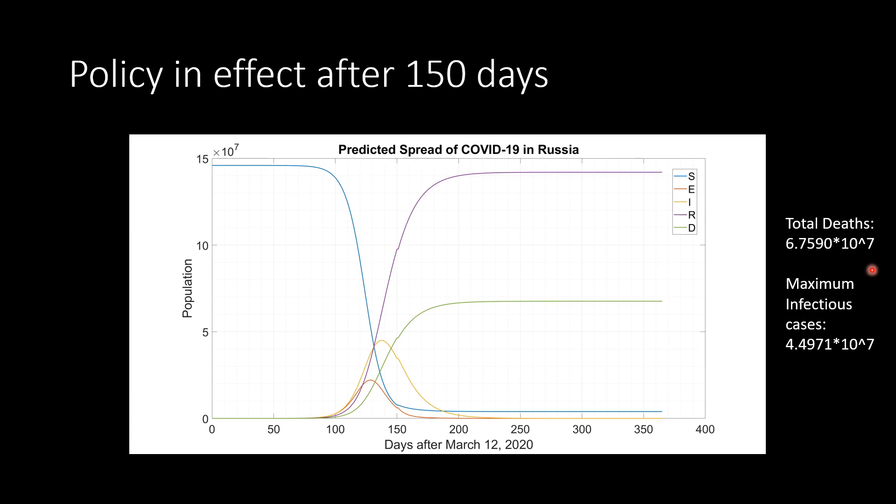This is what happens when the contact rate, for whatever reason, decreases after 150 days. From now on, I will call this the policy effect for simplicity. We can see that the graph shape changes after the 150th day mark. Note that the total deaths have decreased, but the maximum infectious cases have stayed the same because the policy took effect after the peak.